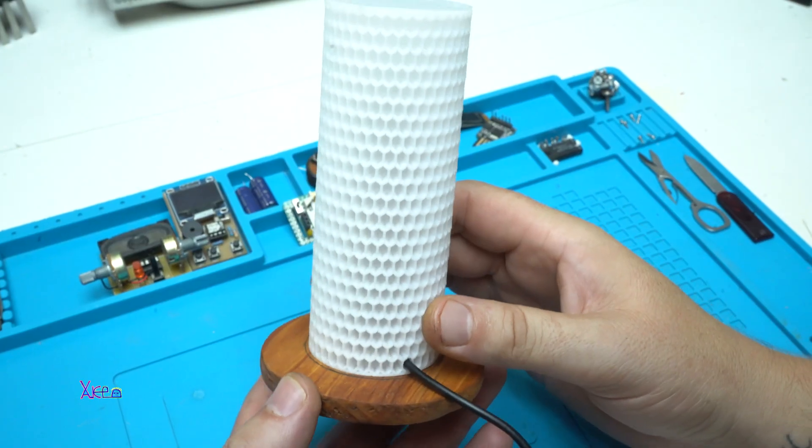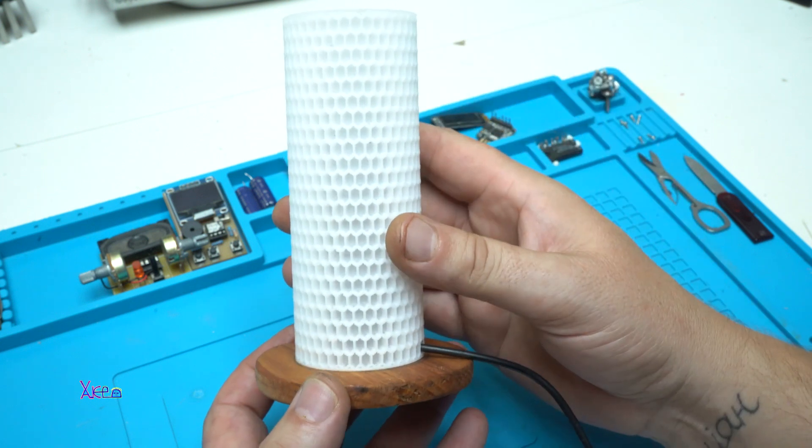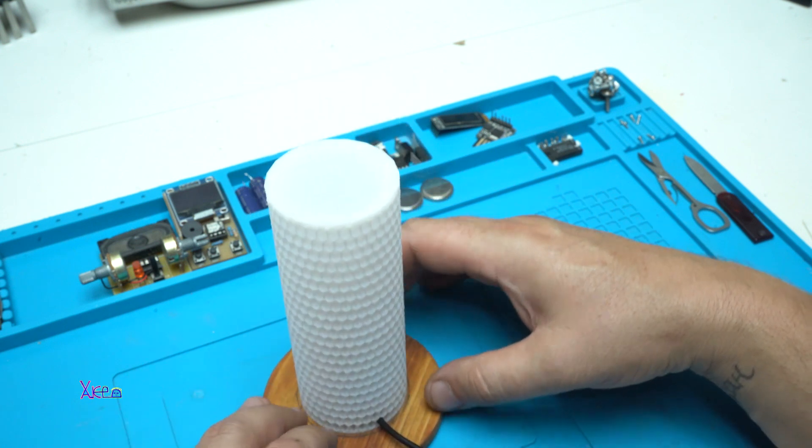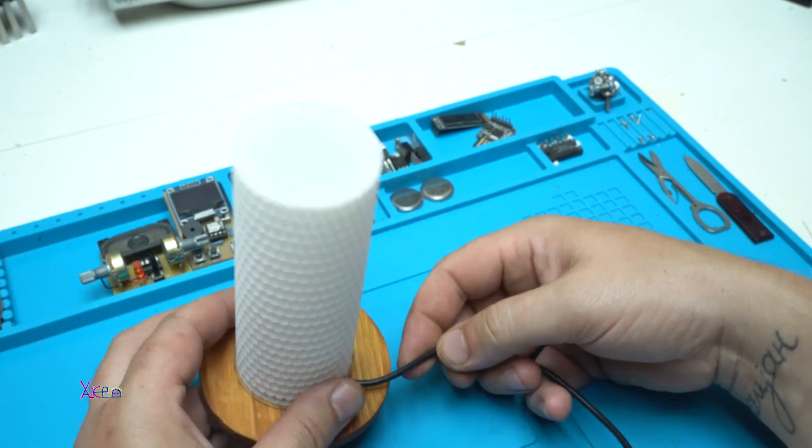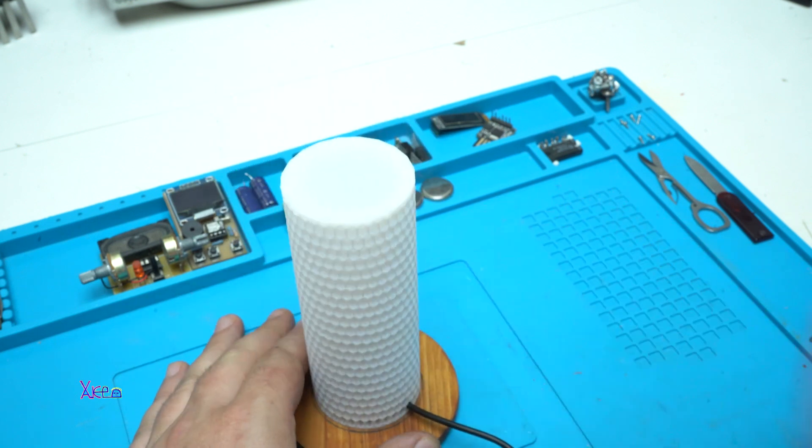I like very much the honey texture on this 3D printed base for the lamp. I made a bottom base from wood, added a USB cable, and that's it. Let's power up.